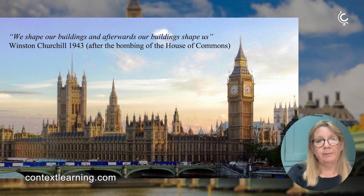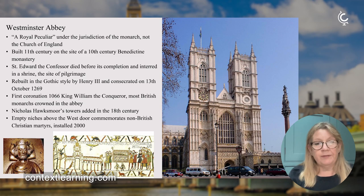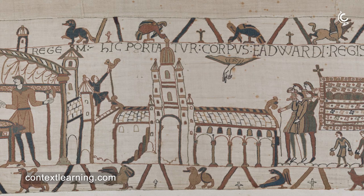Westminster Abbey nearby is described as a 'royal peculiar,' meaning it falls under the jurisdiction of the monarch rather than the Church of England. It was built in the 11th century and appears on the Bayeux Tapestry because it was built by the last-but-one Saxon king, Edward the Confessor, who died before it was completed. He is now a saint and has a shrine within the Abbey.